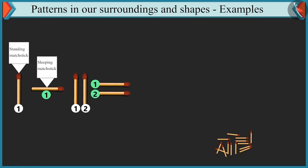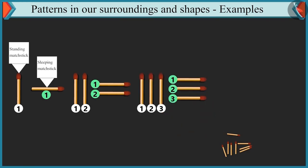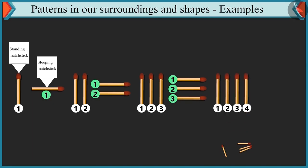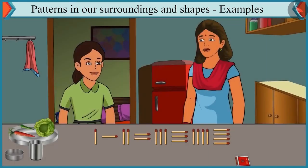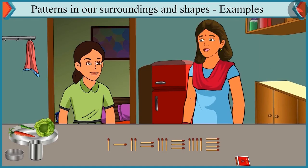So, how many matchsticks do you have to put next in this pattern? Three three matchsticks after two two matchsticks. It means, we will put three standing matchsticks and three sleeping matchsticks. Oh wow. Well done. Now, how will you move ahead with this pattern? We will move ahead by placing four four matchsticks, which means four standing matchsticks and four sleeping matchsticks. Well done, Chutki. You completed this pattern in a perfect manner.